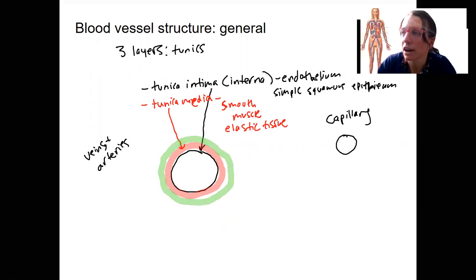Tunica externa is fibrous. So what does that mean in terms of what this is made out of? It's going to be made out of connective tissue, collagen.